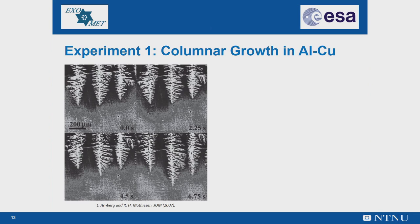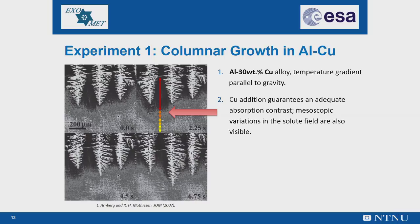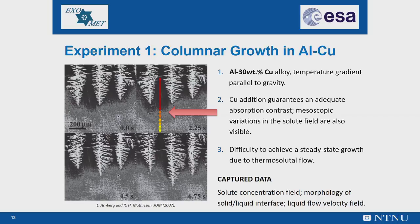In this first video, we showed columnar growth in an aluminium 30 weight percent copper alloy with the temperature gradient set parallel to gravity. We observed that copper addition guarantees an adequate absorption contrast and allows observation of mesoscopic variations in the solute field. It is also observed that it is difficult to achieve steady-state growth due to thermosolutal flow. Several valuable data, including the solute concentration field, the morphology of the solid-liquid interface, and the liquid flow velocity field can be acquired from this video and used to test and validate current solidification models.